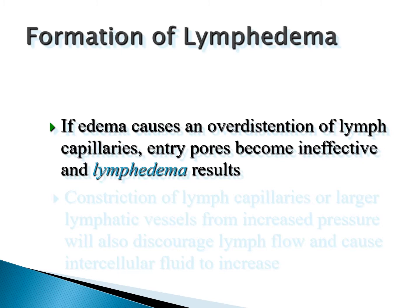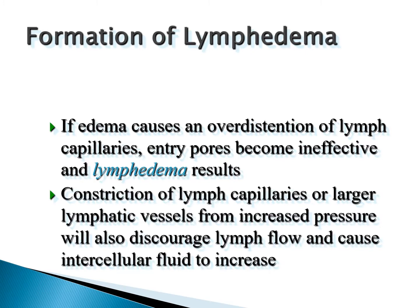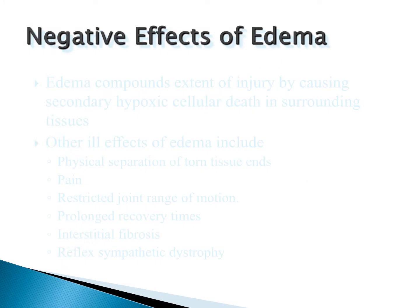Lymphedema results when edema causes over-distended lymphatic capillaries and pores become ineffective. Primary lymphedema is caused by a problem directly with the lymph vascular system itself. Secondary lymphedema can be caused by trauma or other diseases — the lymphedema is brought on by some other condition. Constriction of lymph capillaries or larger lymphatic vessels, and blockages along the way, can also cause this problem.